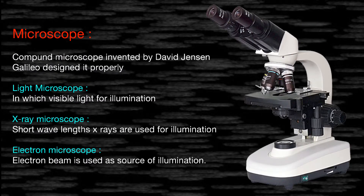Microscopes were invented by David Jansen. After that, Galileo did further design work to make them more refined and easier to use for scientists. He improved the machine based on Jansen's original concept.